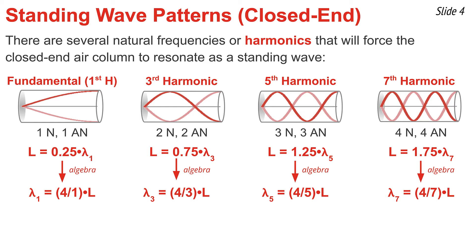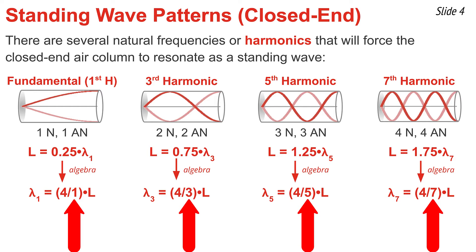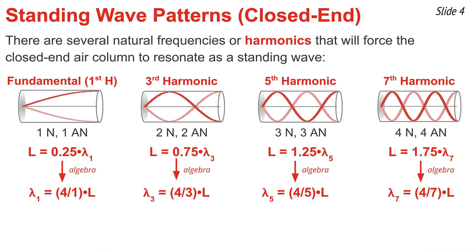Inspecting the fraction in front of L on the right side of each equation, in every case it's four divided by a number, and the numbers in the denominator are one, three, five, and seven. That one, three, five, and seven corresponds to the harmonic number for the first, third, fifth, and seventh harmonic, which explains why we don't have even-numbered harmonics for closed-end air columns — there's no denominator that is ever even. It's always going to be an odd number, simply the consequence of having a node at the closed end and an anti-node at the open end.